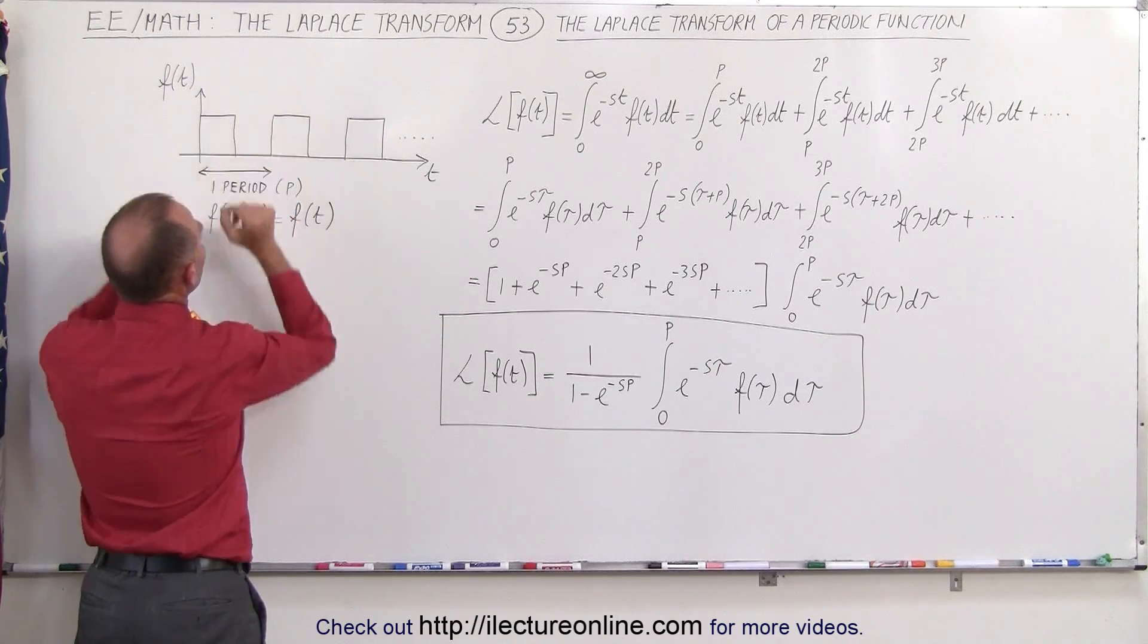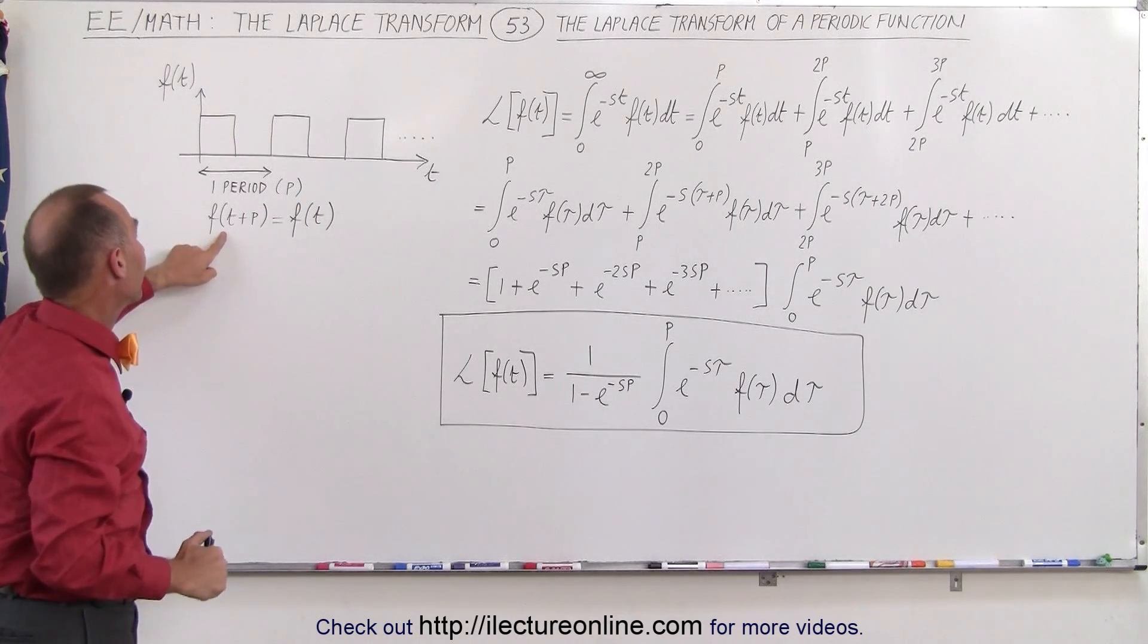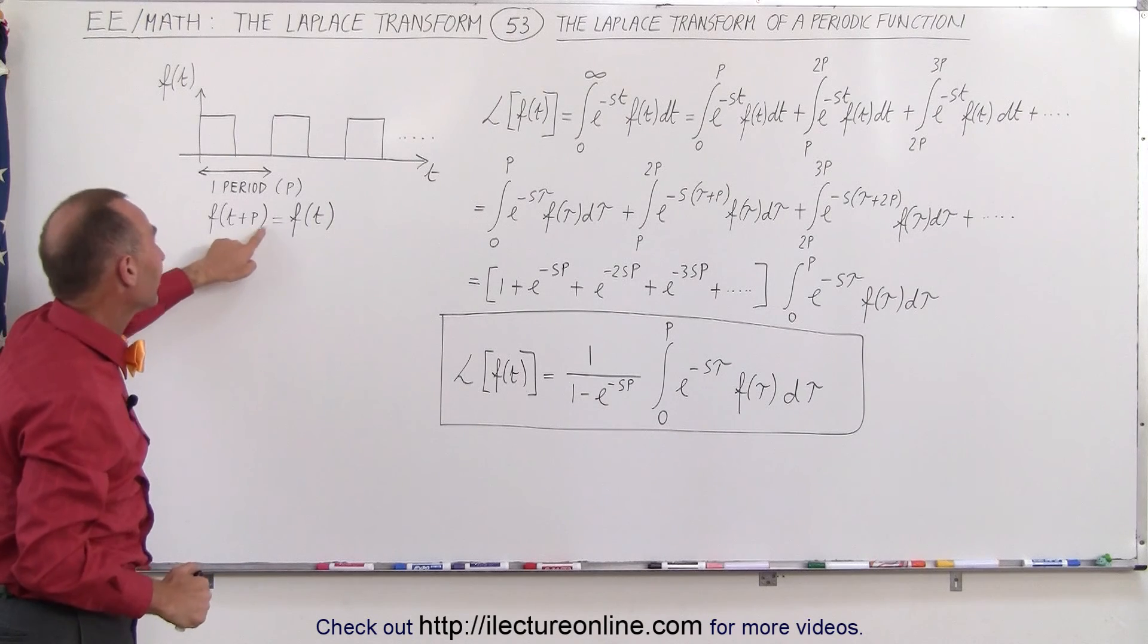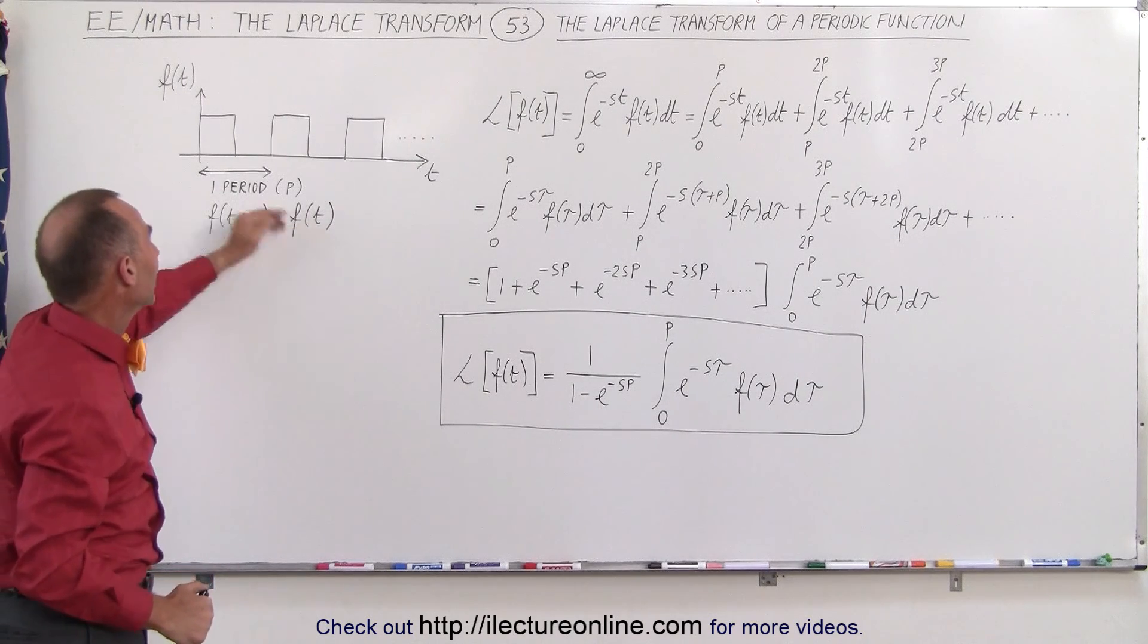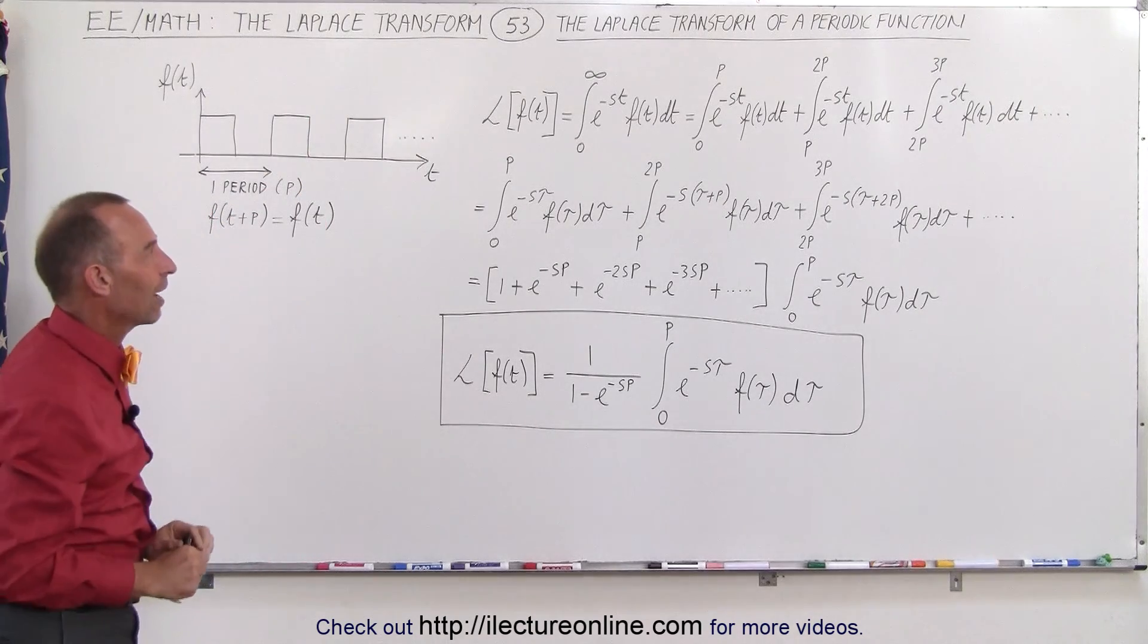So we call this the period of the function denoted by time equals p. And we can then say that f of t plus p is exactly the same as f of t. It doesn't matter if you start here or here or here. The function looks exactly the same.